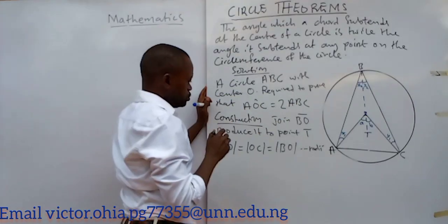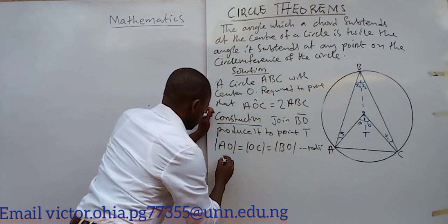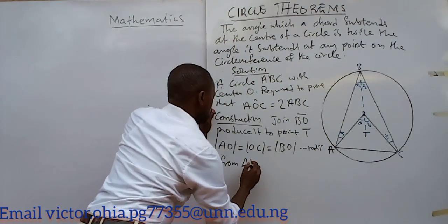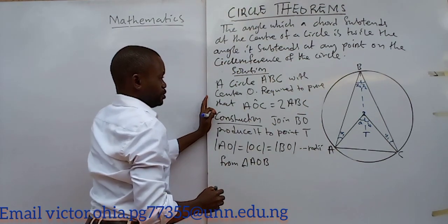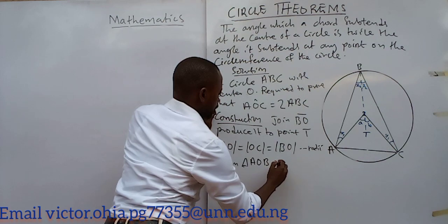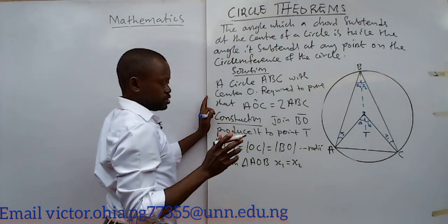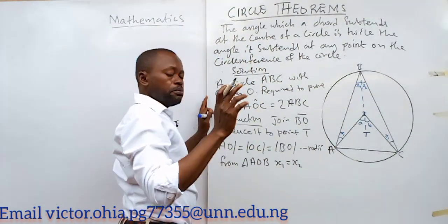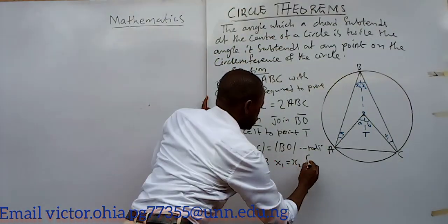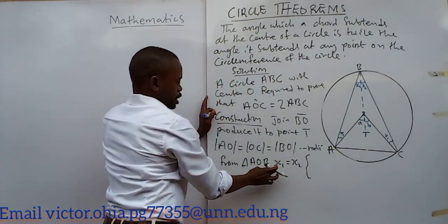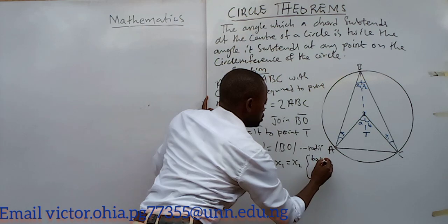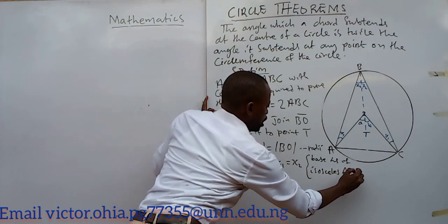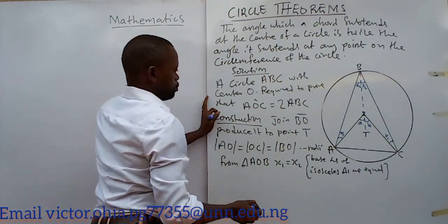From triangle AOB, you will notice that X1 equals X2. Why? Because AO equals BO, both being radii, which makes triangle AOB an isosceles triangle. The base angles of an isosceles triangle are equal, so X1 equals X2.